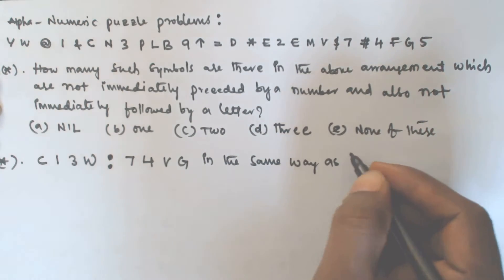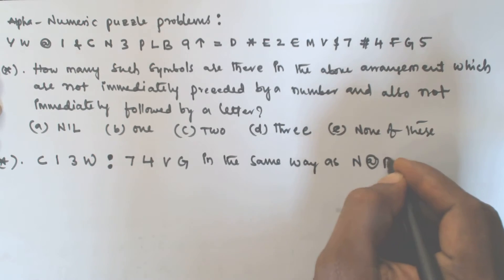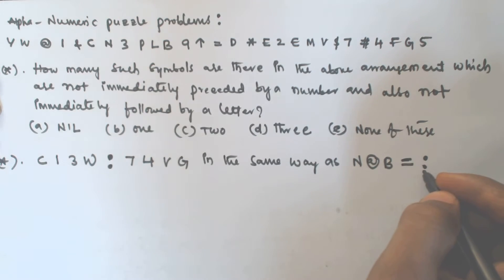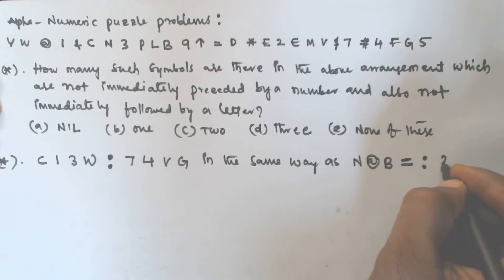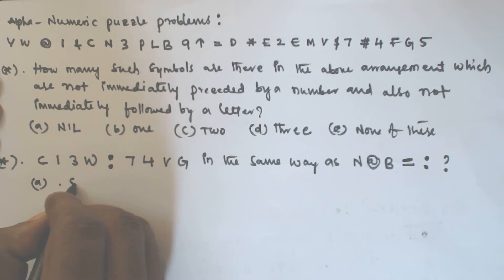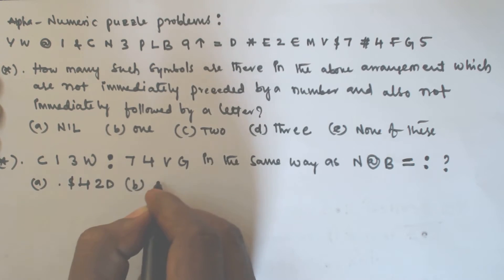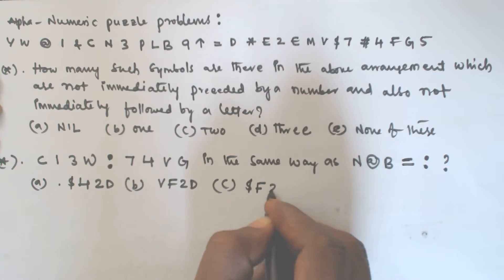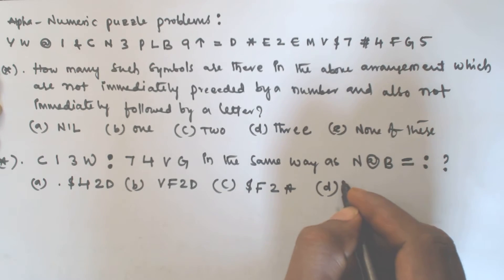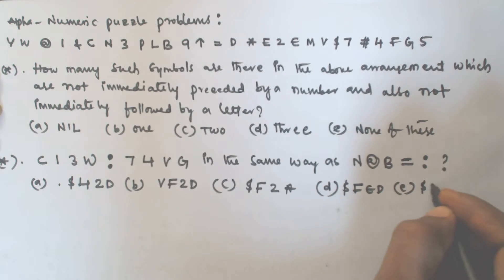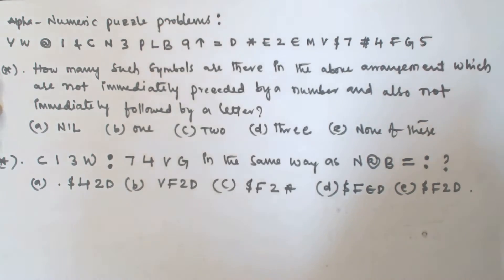...N @ B = : ? So we have to find the corresponding answer. Option A is $ 4 2 D, option B is V F 2 D, option C is $ F 2 *, option D is $ F € D, and option E is $ F 2 D.